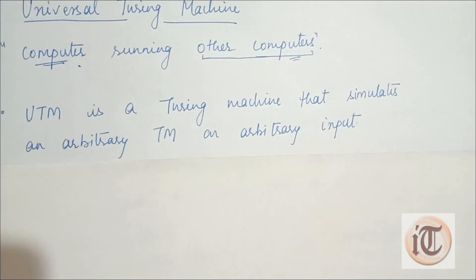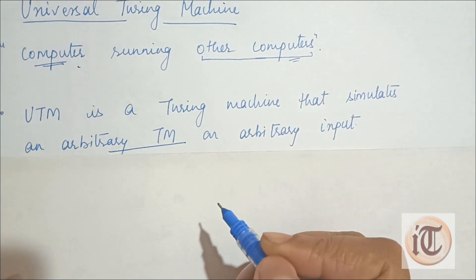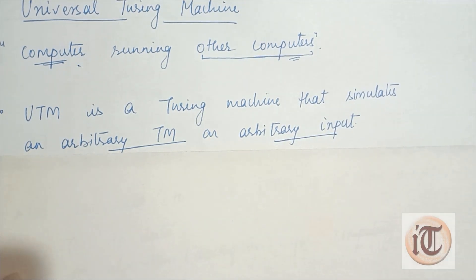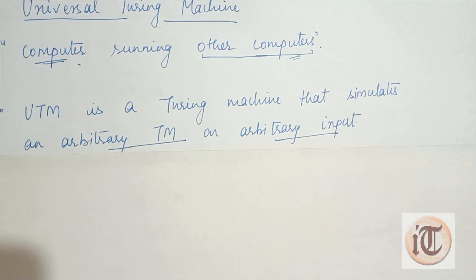A Universal Turing Machine is a Turing Machine that simulates an arbitrary Turing Machine on an arbitrary input. In the Universal Turing Machine, we give an arbitrary Turing Machine's language as well as some arbitrary input, and according to that we determine whether the output will be acceptable or rejectable.